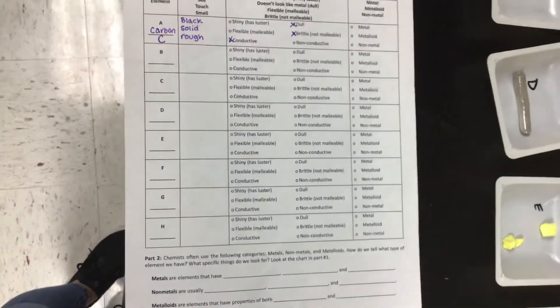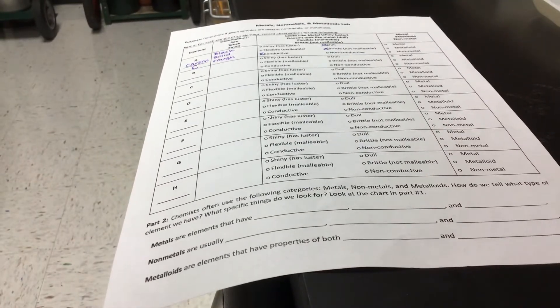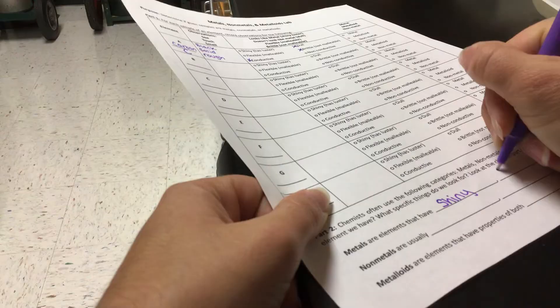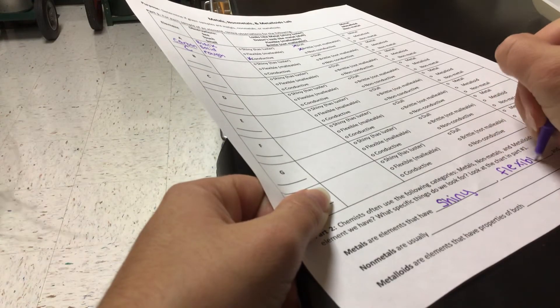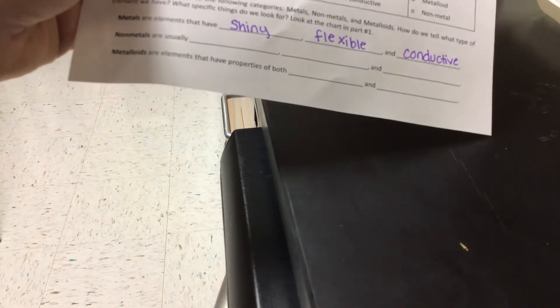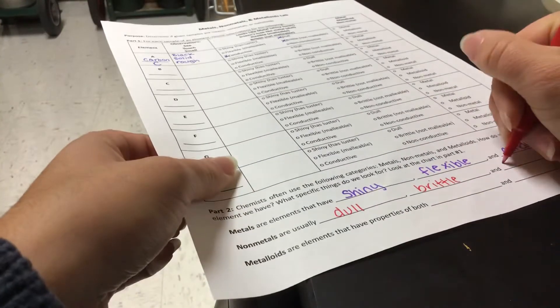Now that you've collected all of your observations, you should have the first three columns filled out. I'll fill out the bottom notes with you, and then you'll use those notes to complete the last column. Metals are elements with properties that are shiny, flexible, and conductive. Non-metals are the opposite — elements that are dull, brittle, and non-conductive.